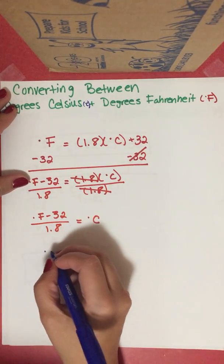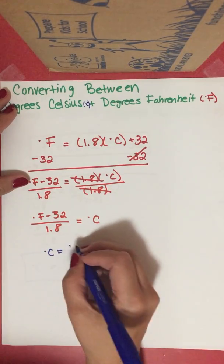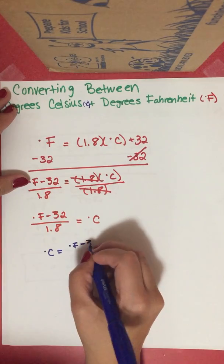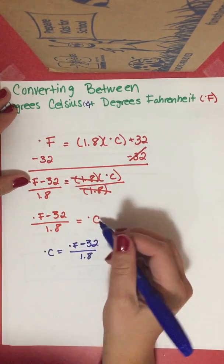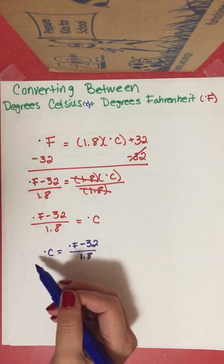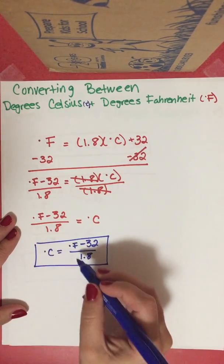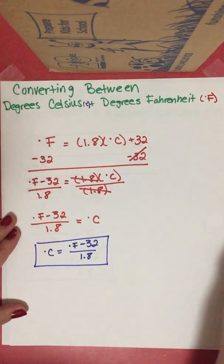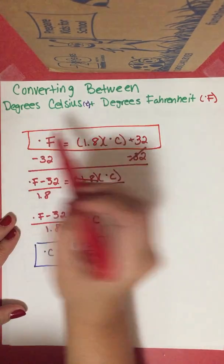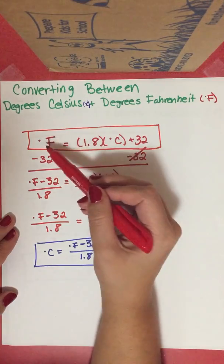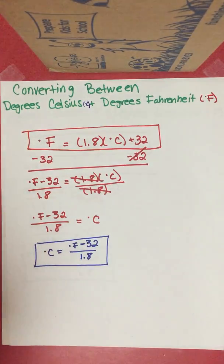So the second formula we'll be using is: degrees Celsius equals degrees Fahrenheit minus 32 over 1.8. This is from Fahrenheit to Celsius, and the first formula is the one we'll use from Celsius to Fahrenheit. Keep both of these in mind.